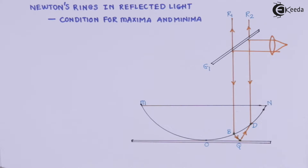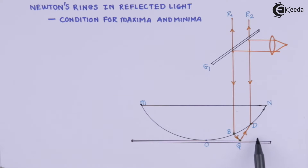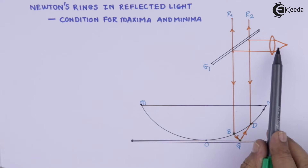Whenever such an assembly is subjected to monochromatic light, what you perceive is nothing but the Newton's rings. They are formed due to the interference of light waves in the air gap between the lens and the glass surface.